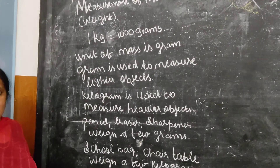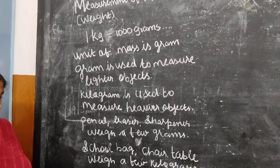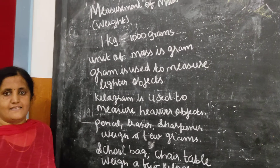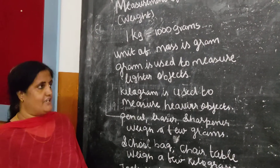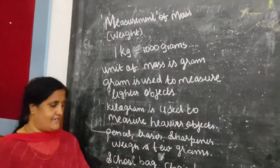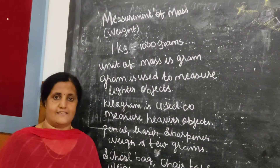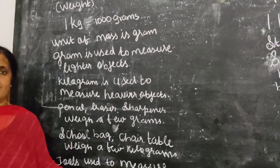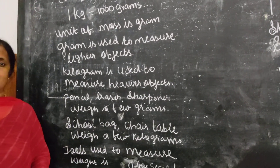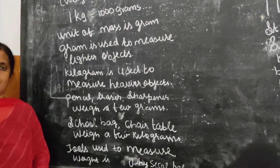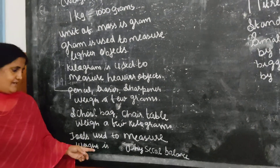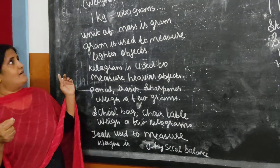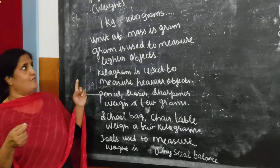The tool used to weigh objects is the physical balance. These weights are all measured using a physical balance. Do you know what a physical balance is? It is used to weigh things. This is what we use in measurement of mass.